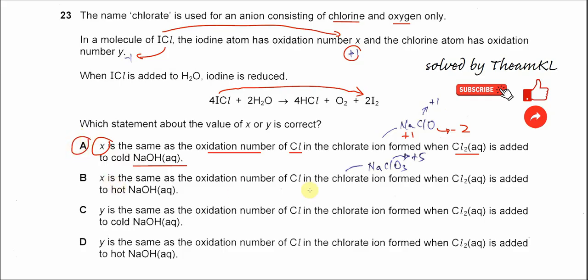The answer cannot be B because when chlorine reacts with hot sodium hydroxide, it forms sodium chlorate with chlorine oxidation number +5.